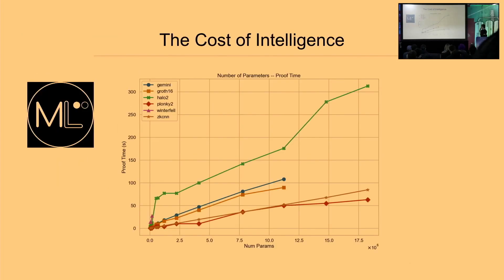I'll show a graph comparing all these different proving systems. The list includes Gemini, Groth16, Halo 2, Plonky2, Winterfell, and a custom prover built within a paper called ZKCNN. On the x-axis is the number of parameters, and on the y-axis is how long it took to create a proof given a proving system for that specific model. The one on the lowest line — the dark orange — is Plonky2, the very last dot on the bottom right.